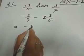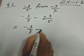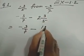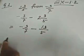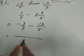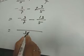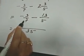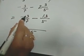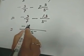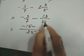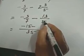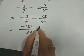So we have minus 3 by 7 minus 13 by 5. The LCM of 7 and 5 is 35. 35 divided by 7 is 5; 5 into minus 3 gives minus 15. Minus 35 divided by 5 is 7; 7 into 13 is 91.